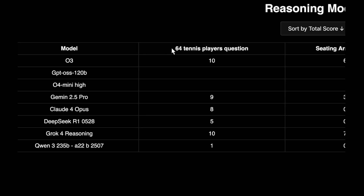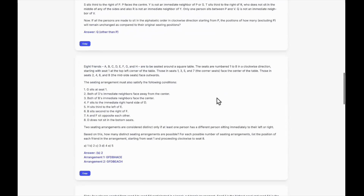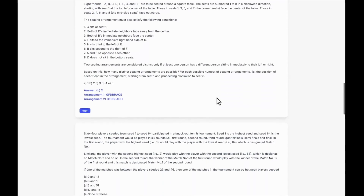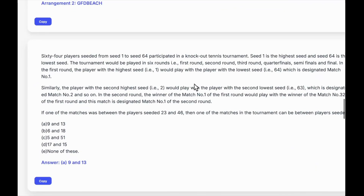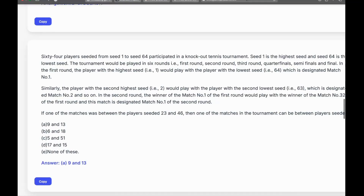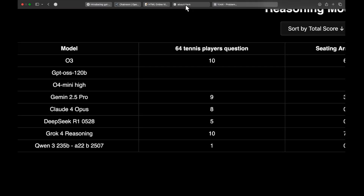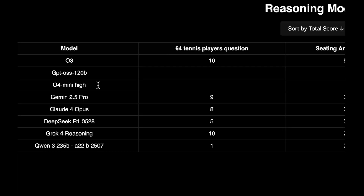Let's talk about the first question: 64 tennis player. The correct answer is option A, 9 and 13. We'll be focusing on O4 mini high and the GPT OSS 120B model. If you talk about the best performing model, it is OpenAI O3 and Grok 4 scoring 10 out of 10.